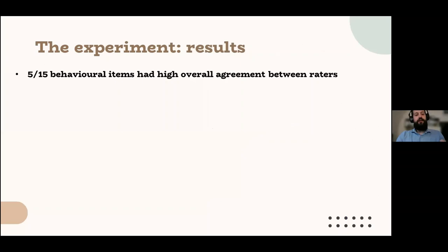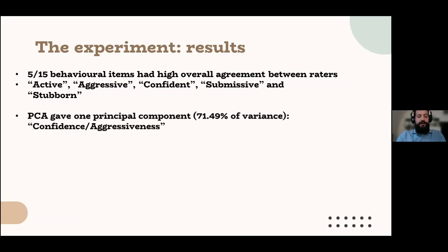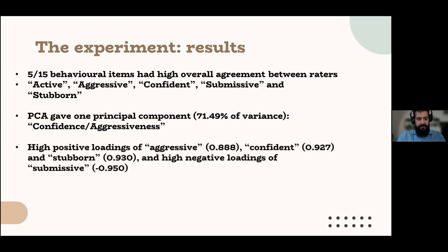Our results. So, five out of 15 behavioral items had a high overall agreement between the raters, and these were active, aggressive, confident, submissive, and stubborn. The principal component analysis gave one principal component explaining almost 72% of the variance, and we labeled it confidence-aggressiveness. This component had a high positive loading of aggressive, confident, and stubborn, and a high negative loading of submissive.